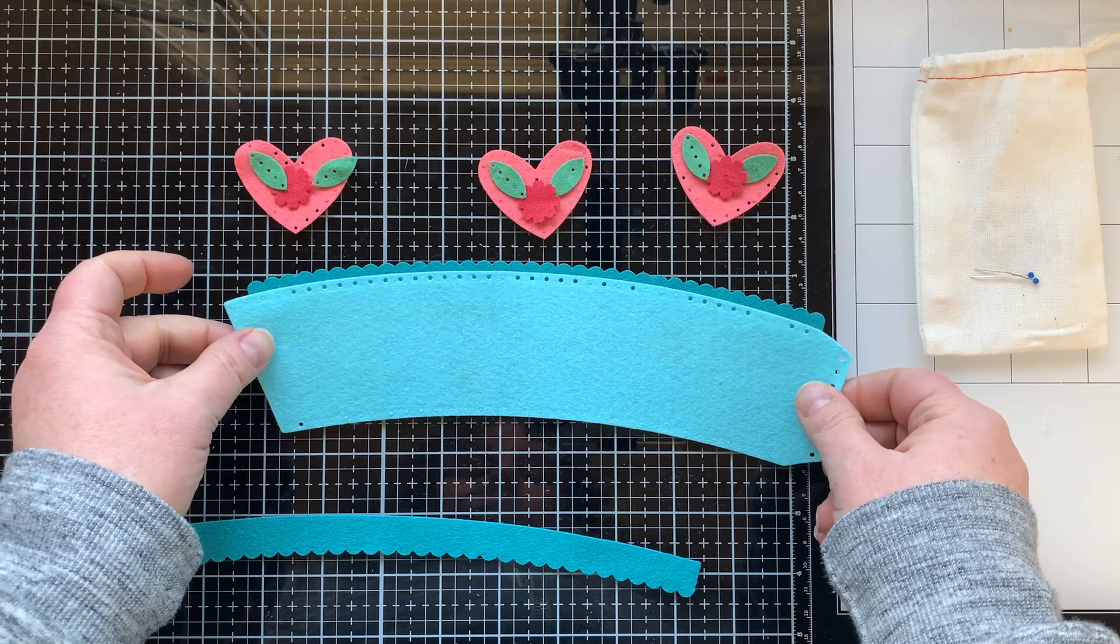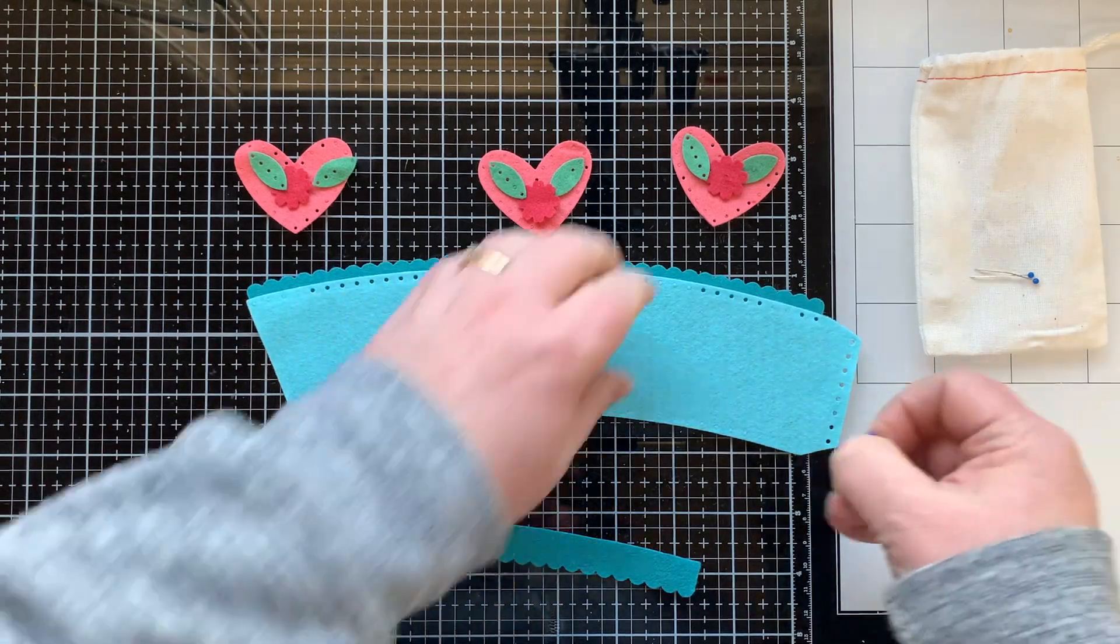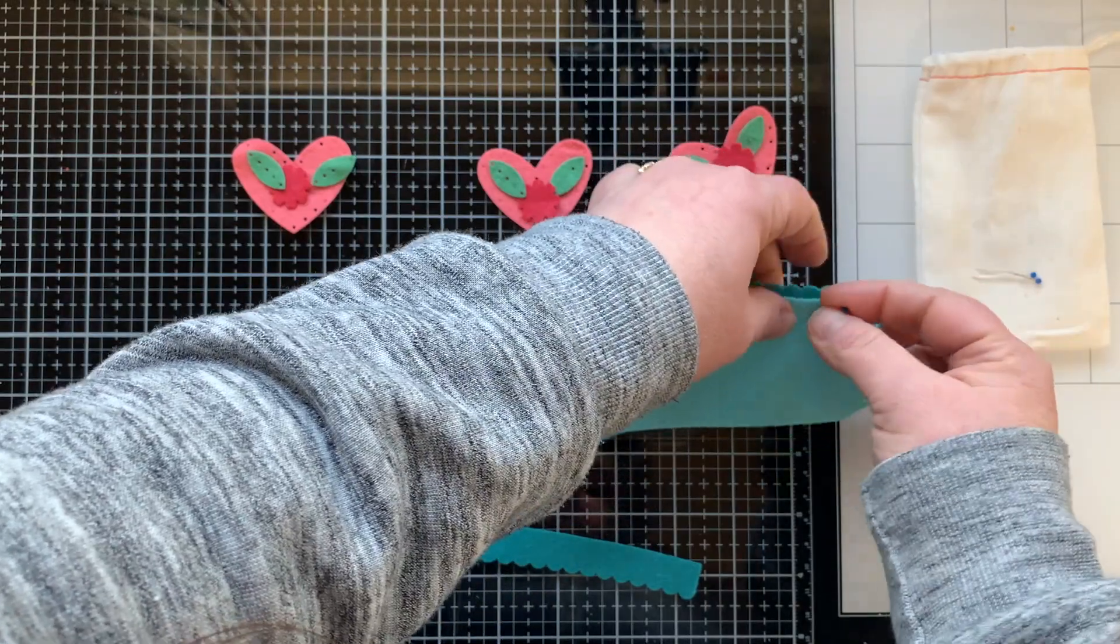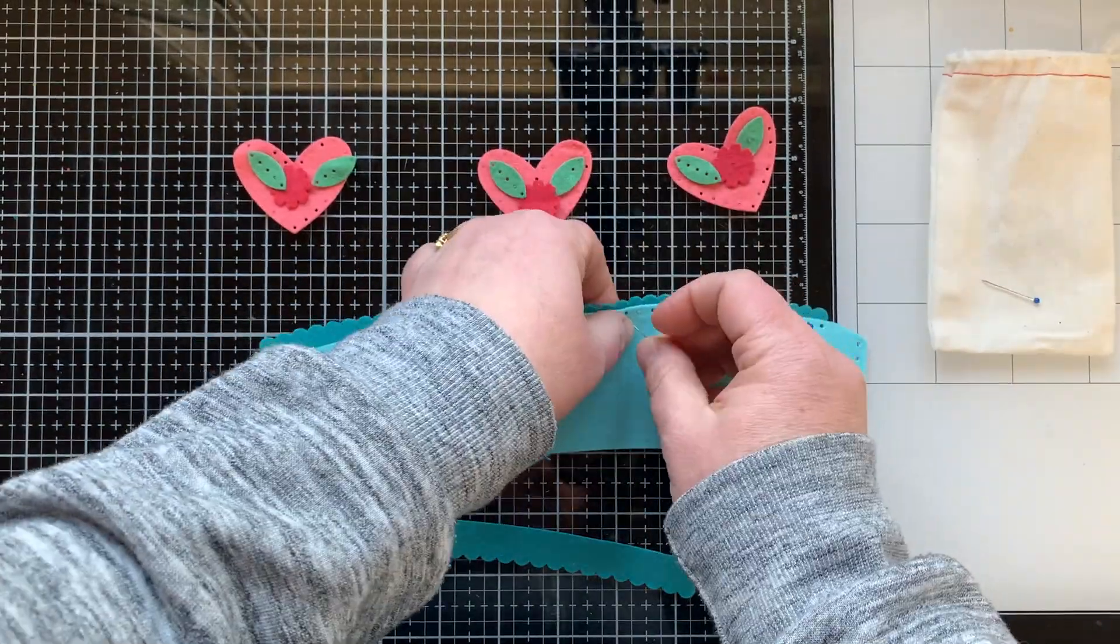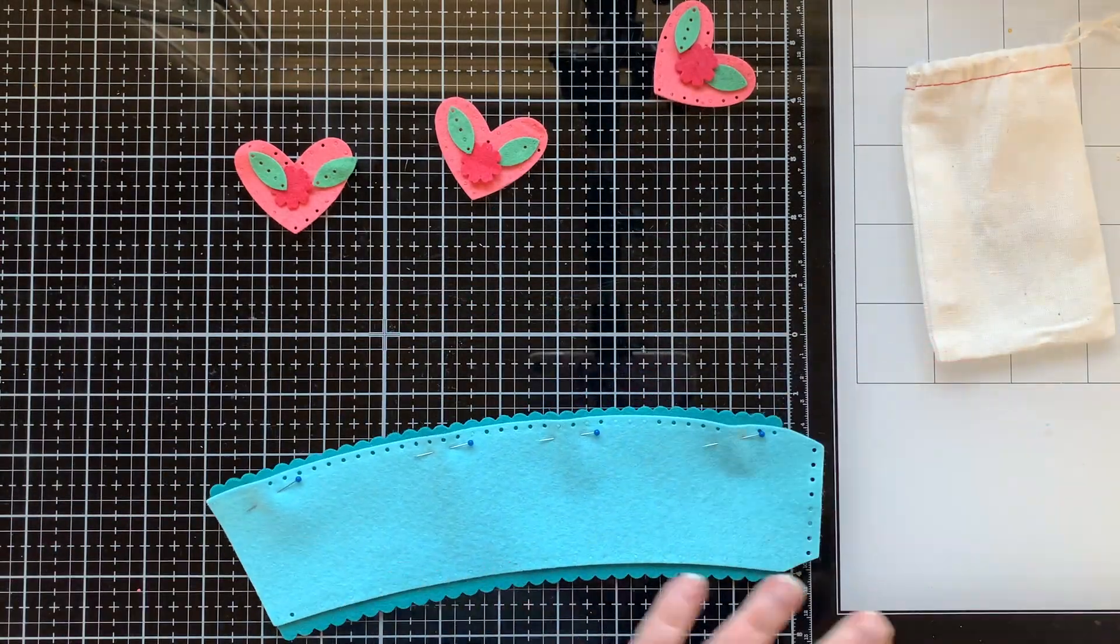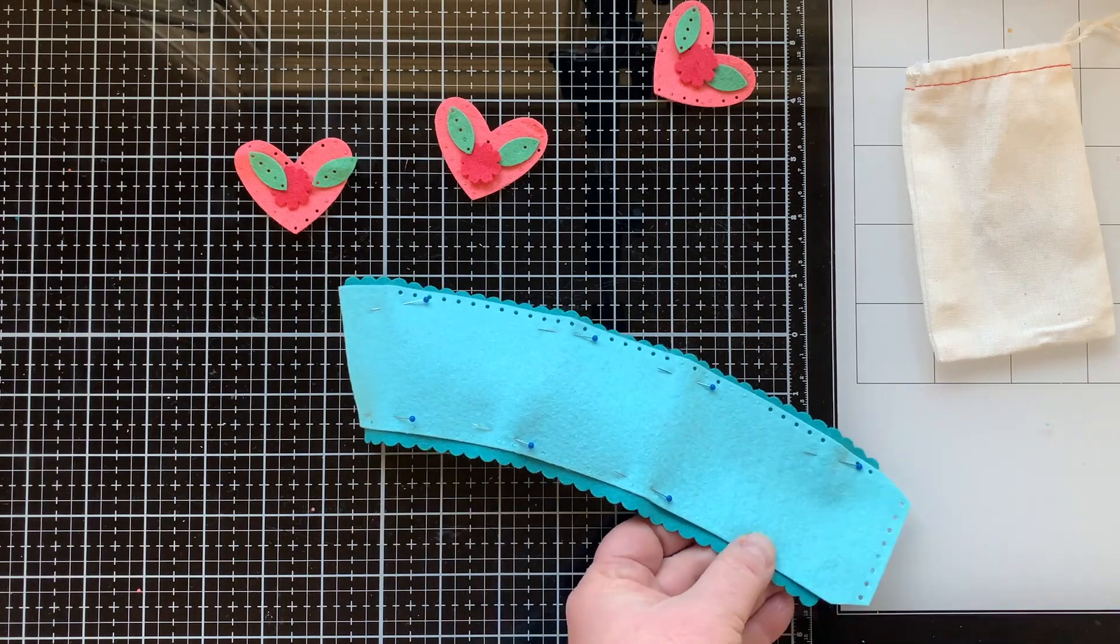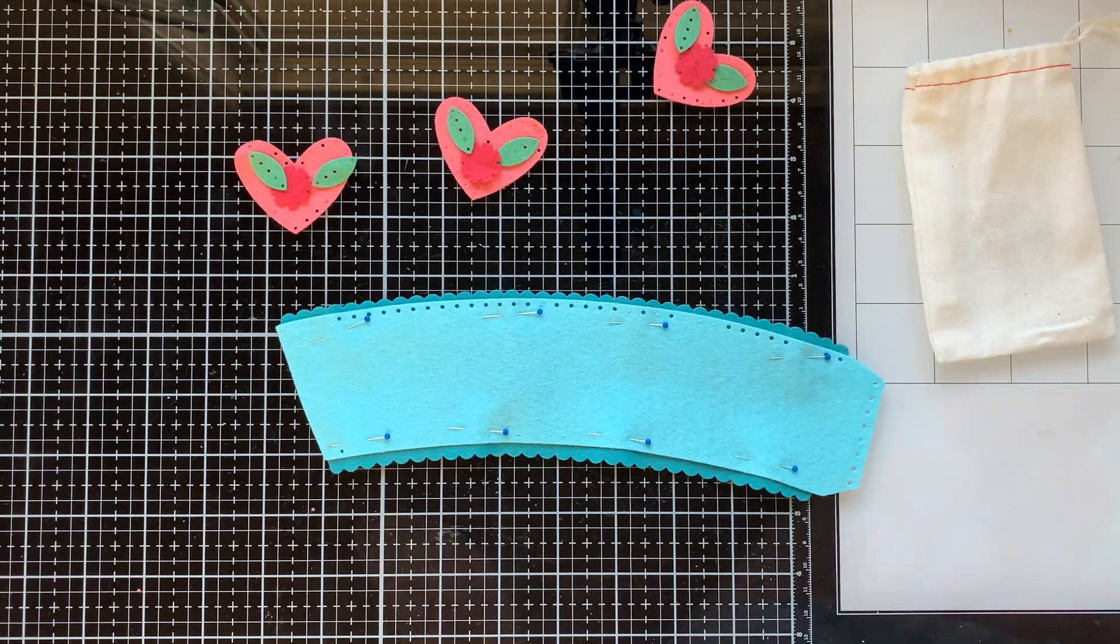I wanted to stitch on those scallops first so I'm going to use some pins to pin them together so that they hold in place and don't wiggle around when I'm trying to do the stitching. So I just use four pins across the top and four across the bottom and that will hold it where I need to have it.